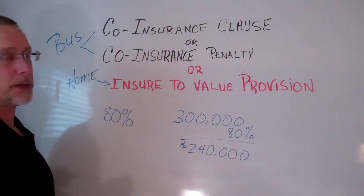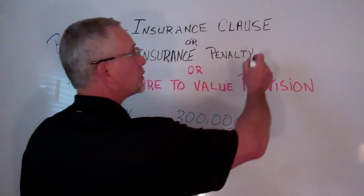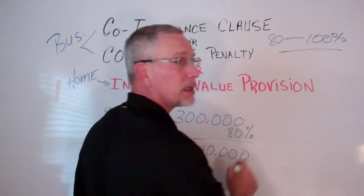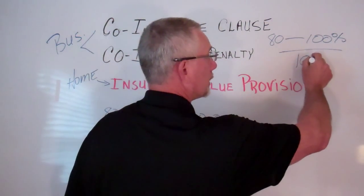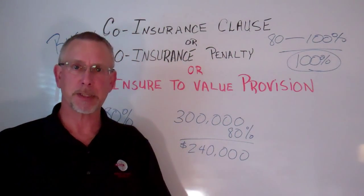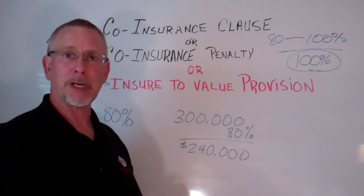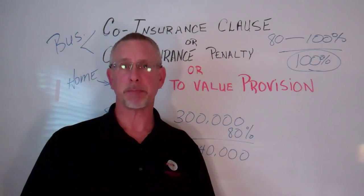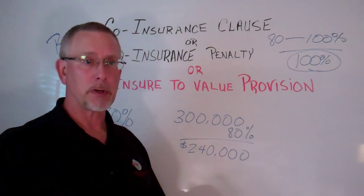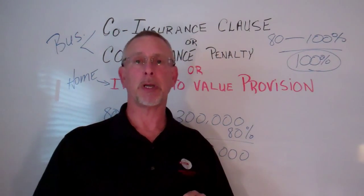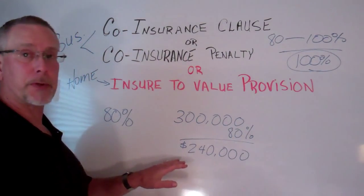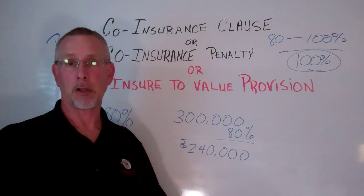On business insurance, the co-insurance clause on business policies can range from 80% all the way up to 100%, and these days I'm seeing more and more of these going to the 100% situation — the insurance company is requiring the business owner to keep their building and contents insured to 100% replacement cost. This is where it becomes very important to periodically have a brand new cost estimator done on your home or business in order to make sure you fulfill the requirements of the co-insurance clause within your policy.